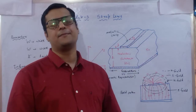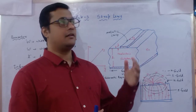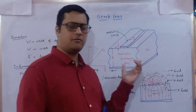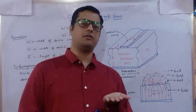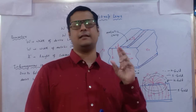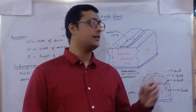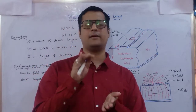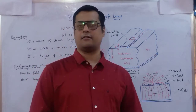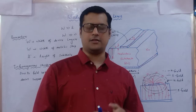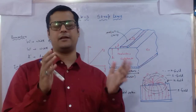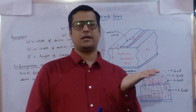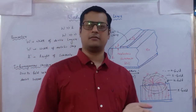In a coaxial cable, information is delivered through the core, with both electric and magnetic fields guided within the medium. Similarly, in a microstrip structure, we first identify the substrate, which is a dielectric material. The construction is essentially a sandwich of two metal layers with a dielectric — like a parallel plate capacitor.